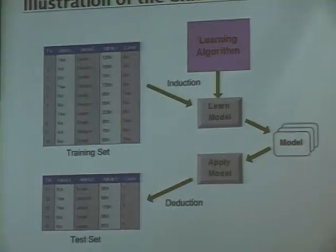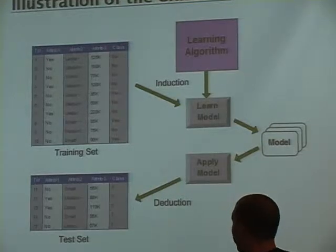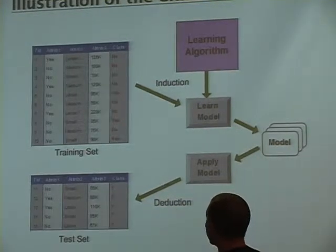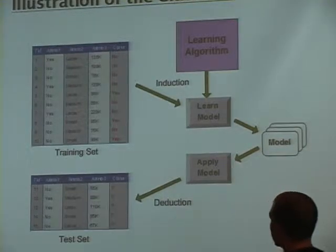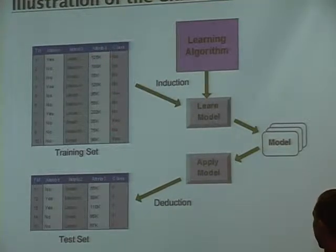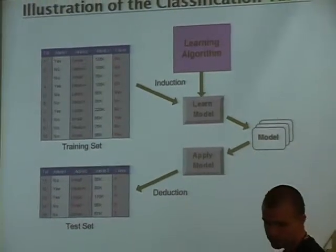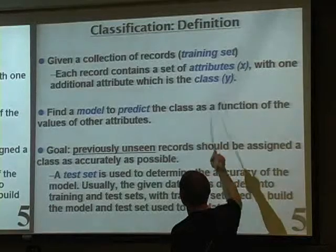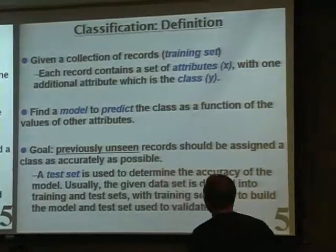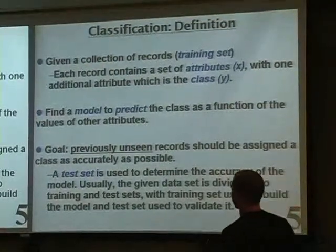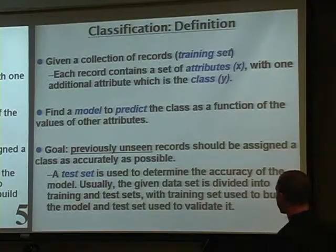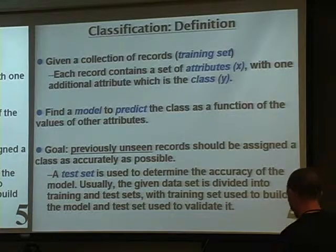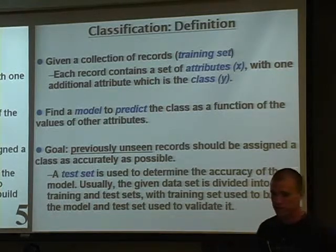To measure performance, since you won't know the class on new data, you hold out some data as a test set. Pretend you don't know the class, apply your predictive model, get the class estimates, and see how close those are to the actual labels. That gives an estimate of generalization error. Usually the dataset is divided into training and test sets, and there are more advanced procedures like cross-validation where you repeatedly leave out different fractions.